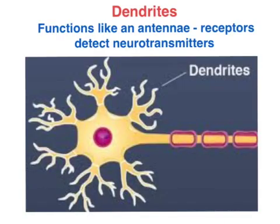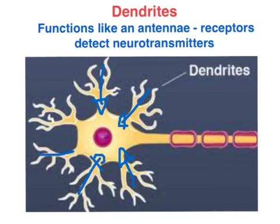The dendrites are branch-like structures which contain receptors that detect and receive neurotransmitters released into the synapse. They carry messages towards the cell body, and if there is an adequate level of messages, then an action potential is generated.